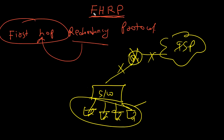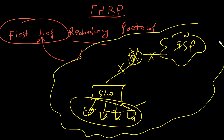FHRP is a group of protocols. In this network scenario you can see we don't have backup paths — no backup for the default gateway.